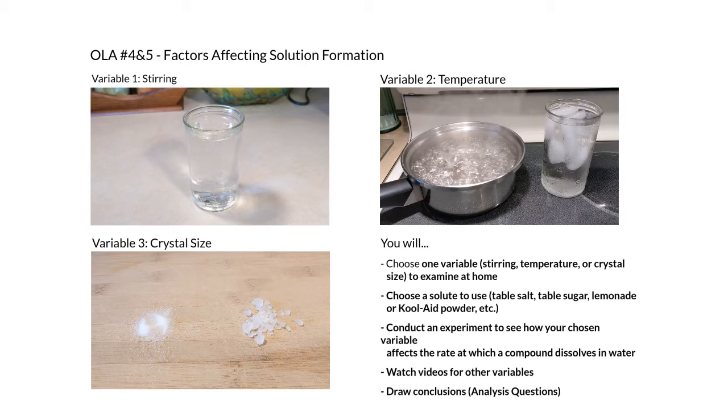You will be conducting an experiment at home to examine one of these three variables. You'll start by choosing one of the variables—either stirring, temperature, or crystal size. This is going to be your independent variable. You will be changing this variable deliberately throughout the experiment.